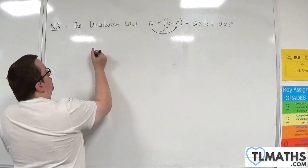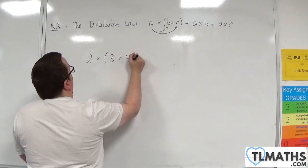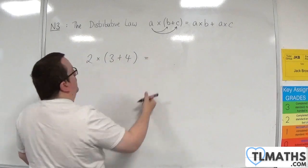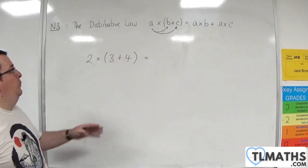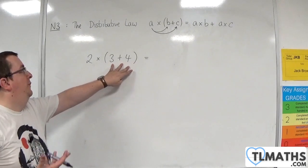So we could write 2 times 3 plus 4. Now from what we've seen already, we could say, right, that's 3 plus 4. Because we do what's in the bracket first, so that's 7.